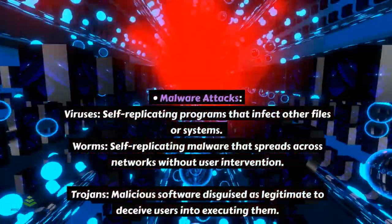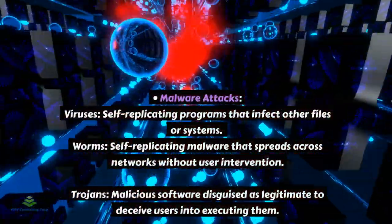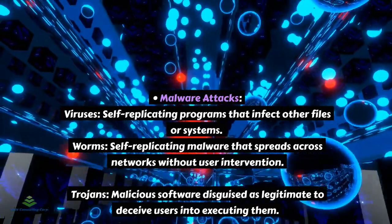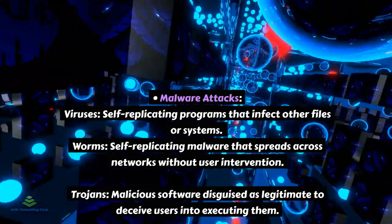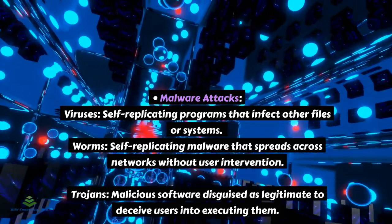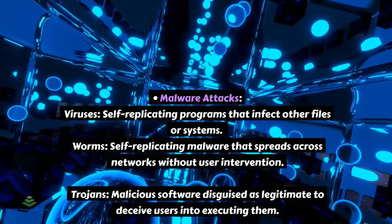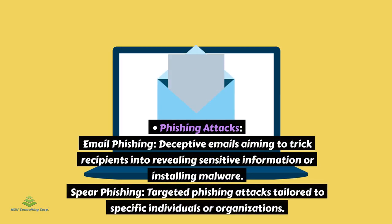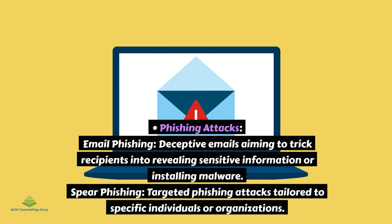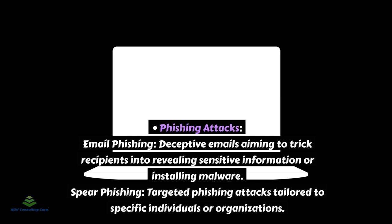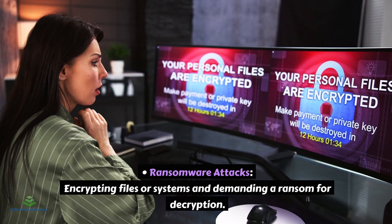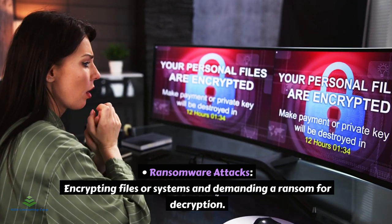Malware attacks: viruses — self-replicating programs that infect other files or systems; worms — self-replicating malware that spreads across networks without user intervention; trojans — malicious software disguised as legitimate to deceive users into executing them. Phishing attacks: email phishing — deceptive emails aiming to trick recipients into revealing sensitive information or installing malware; spear phishing — targeted phishing attacks tailored to specific individuals or organizations. Ransomware attacks — encrypting files or systems and demanding a ransom for decryption.